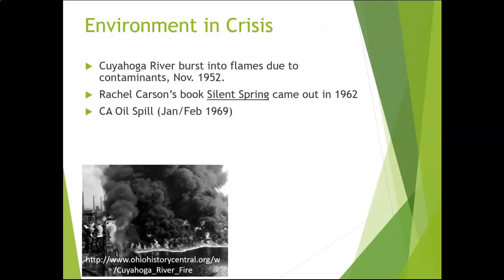That happened in November of 1952. Then Rachel Carson's book, Silent Spring, came out in 1962. That book was instrumental in discussing chemical contaminants, and in particular pesticides, and the damage that they caused on human health but also on ecosystems. At this time, we started to think about health in a broader sense — not just looking at human health but looking at the health of the biological community around us.